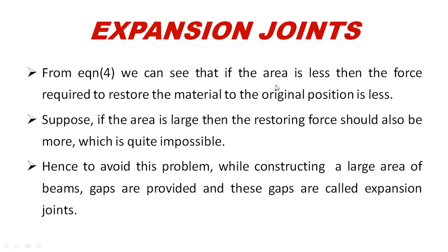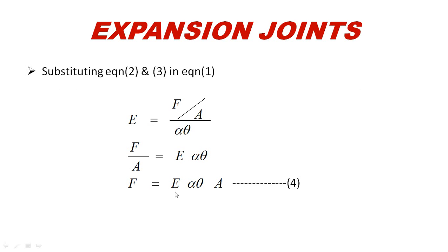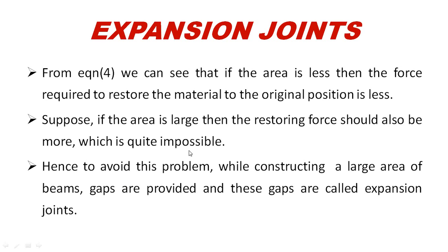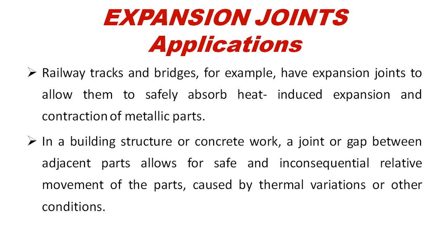From equation 4, if the area is less, then the force required to restore the material to its original position is also less. To avoid problems with force buildup in beams, gaps are provided — these gaps are the expansion joints. Applications include railway tracks, bridges, and building structures where concrete works have joint gaps. This is why we use expansion joints.